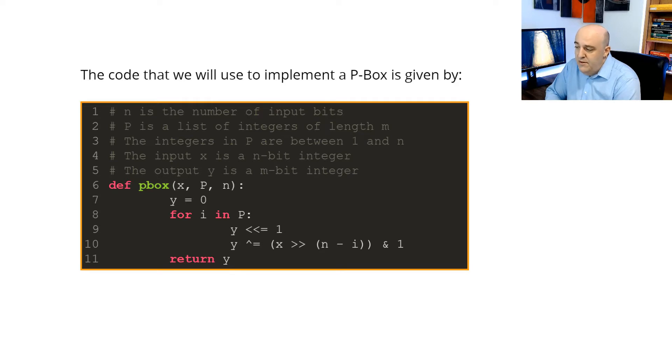This is the code we're going to use to implement a general P-box. Capital P is going to be a list of integers of length M, and N is the number of input bits. M is the number of output bits. The purpose of this function is you take an N-bit integer X, feed it into the P-box function, and it gives you an M-bit integer back as the output.